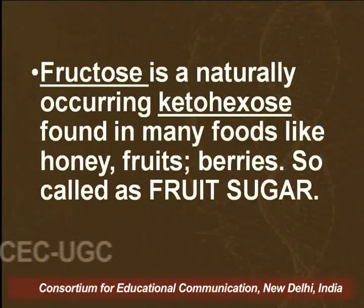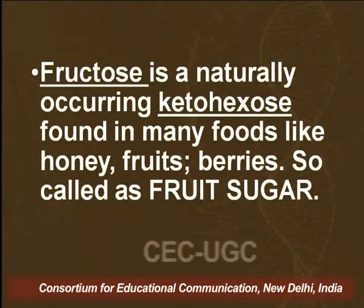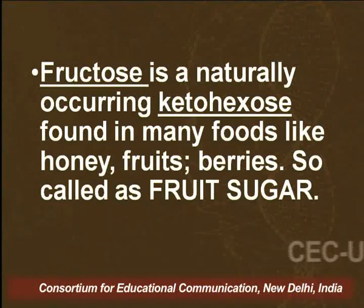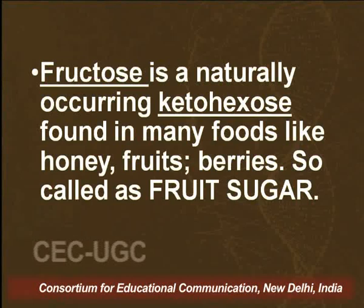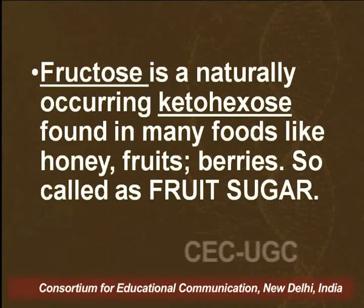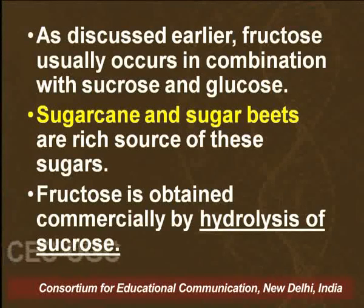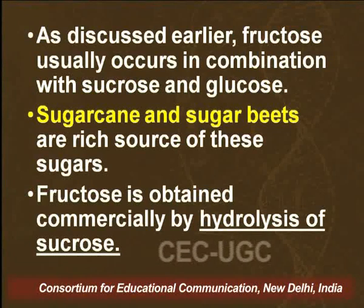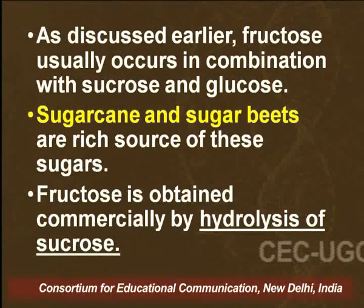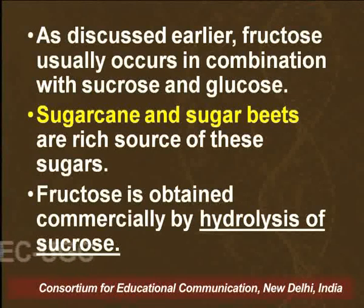It is a naturally occurring keto hexose, and since it is found in fruits like berries and honey, it is also known as fruit sugar. We know that sugar cane and sugar beets are rich sources of these sugars; that is, it occurs in combination with sucrose and glucose in nature.